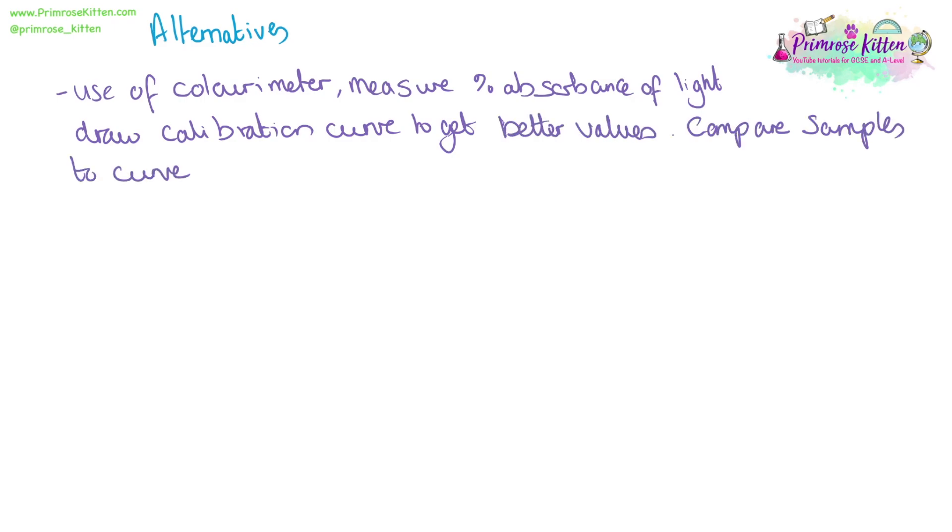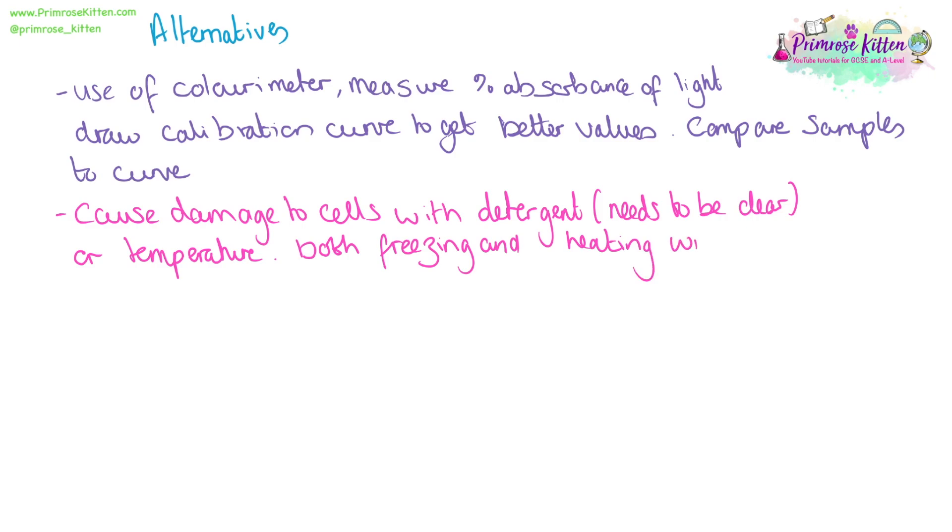There are a number of alternatives, ways that you can improve this experiment, and ways that you can make it ever so slightly different in the exam. We can use a colourimeter, so we can get the exact absorbance of the solution, and this is going to make it into a quantitative experiment. You can get the percentage absorbance of light, and then you can draw a calibration curve. This will give you exact numerical values, and compare samples to the curve better than just using your eye. Instead of using alcohol to damage the membranes, you could do it with detergents. It needs to be a clear detergent so it doesn't interfere with your results. You could also change the temperature. Both freezing and heating will damage membranes, so that is a way to expand the experiment, or a way they might talk about it slightly differently in an exam setting.